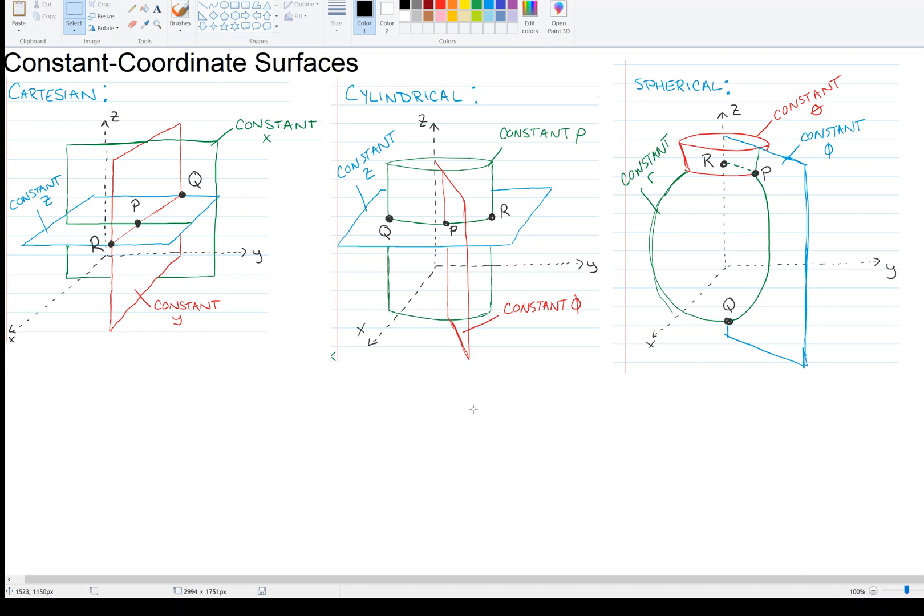Now, turn your attention to the middle figure, which is cylindrical coordinates. Remember, in cylindrical coordinates, we have three numbers that we specify, which are rho, phi, and z. A lot of what we said about the Cartesian coordinate system will apply here, but it's a little bit different.